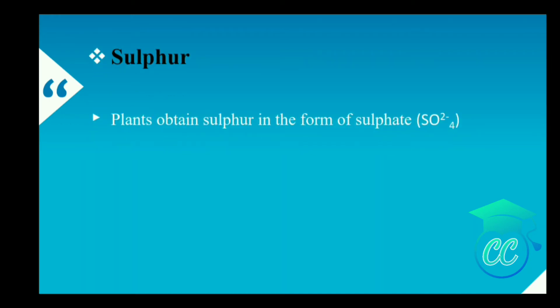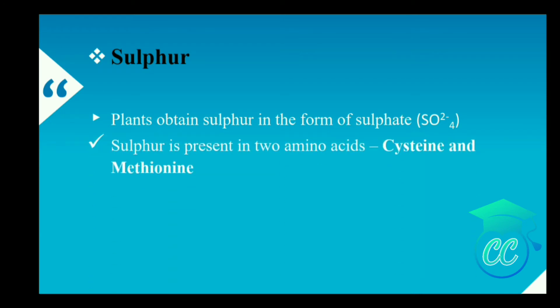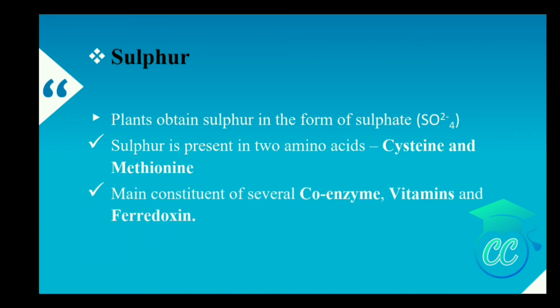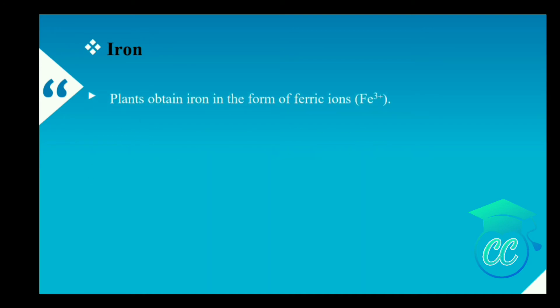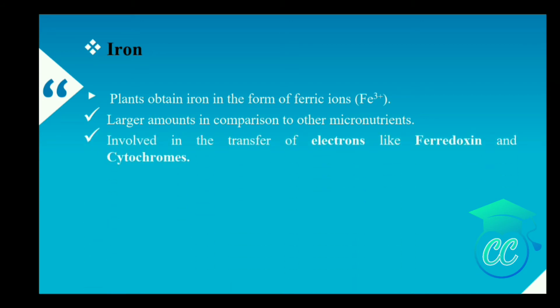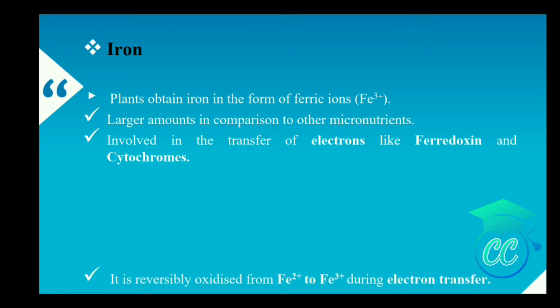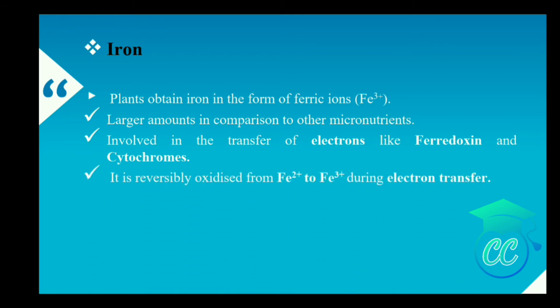Sulfur is absorbed in the form of sulfate ions. Sulfur is present in two amino acids — cysteine and methionine — and also forms a major constituent of several coenzymes, vitamins and ferredoxin. Next, iron. Iron is absorbed by the plants in the form of ferric ions, and is required in larger amounts compared to other micronutrients. The role of iron is that it is involved in the transfer of electrons, during which it is reversibly oxidized. It also activates several enzymes.